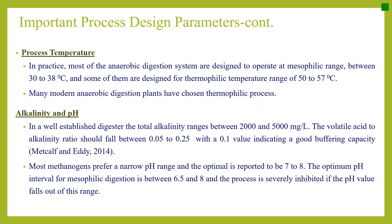The next parameter is alkalinity and pH. For a well-established digester, the total alkalinity range should be between 2000 and 5000 mg per litre. The volatile acid to alkalinity ratio should fall between 0.05 to 0.25, with a value of 0.1 indicating good buffering capacity. The optimal pH range for methanogens is reported to be 7 to 8, and the optimum pH interval for mesophilic digestion is between 6.5 and 8. The process is severely inhibited if pH falls outside this range.